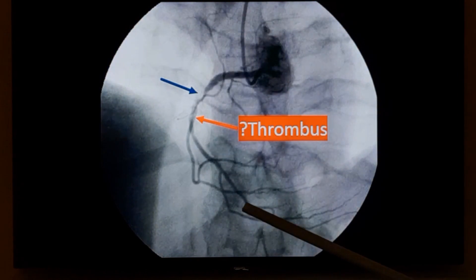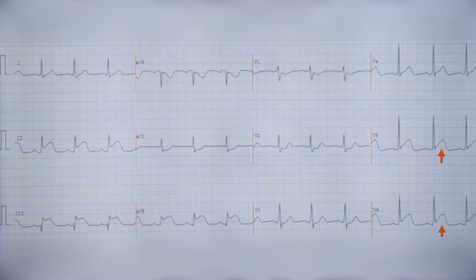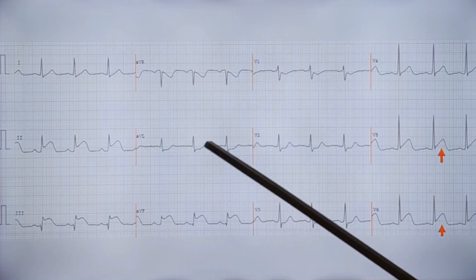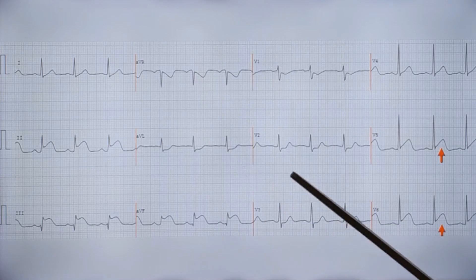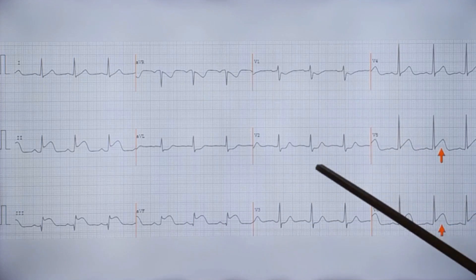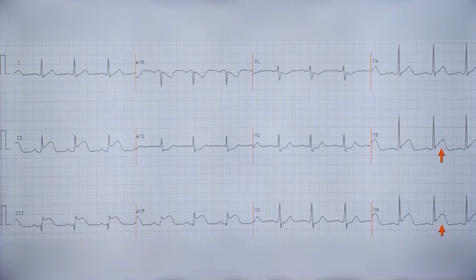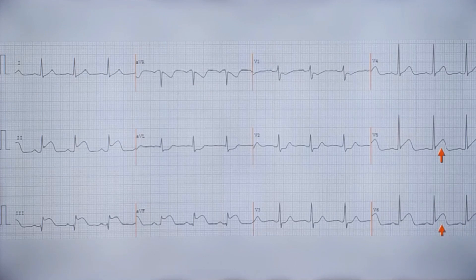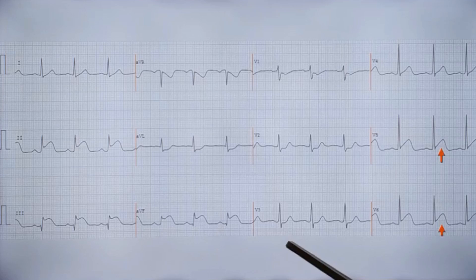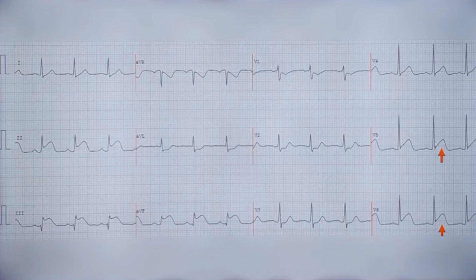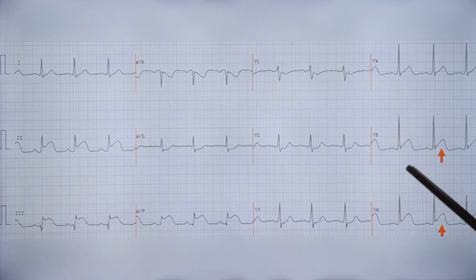Now, have a look at this ECG from another person. Such extensive ST depression as in the previous case is not present. There is mild ST depression in V1 and V2 in the presence of ST elevation in inferior and lateral leads. The presence of ST elevation in lateral leads — meaning infralateral myocardial infarction — would definitely be more in favour of a left circumflex lesion. Occasionally a very dominant right coronary artery could supply the lateral region, but that is uncommon. More likely, in an infralateral infarction, you would think of circumflex occlusion.